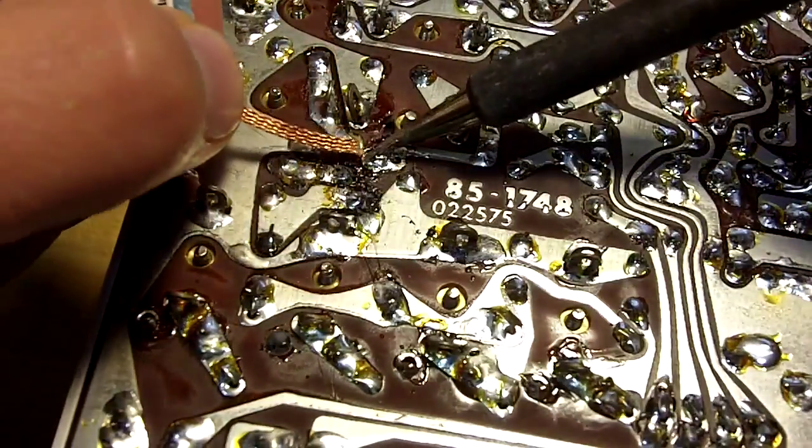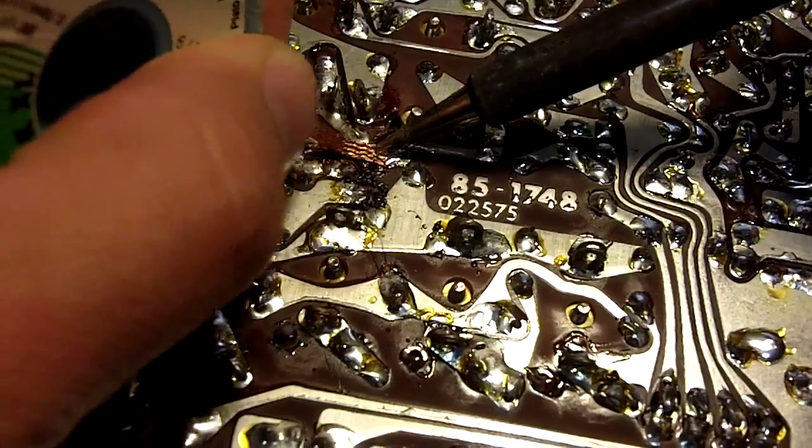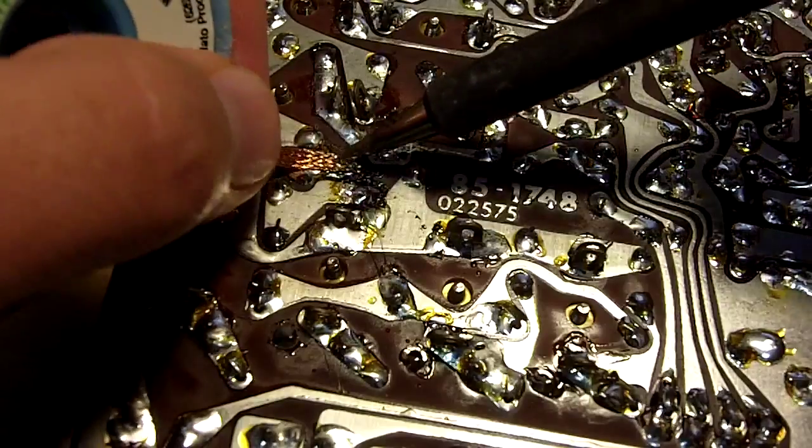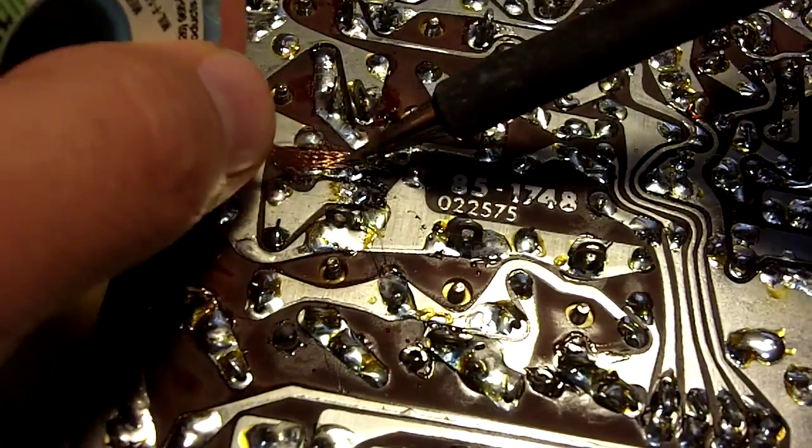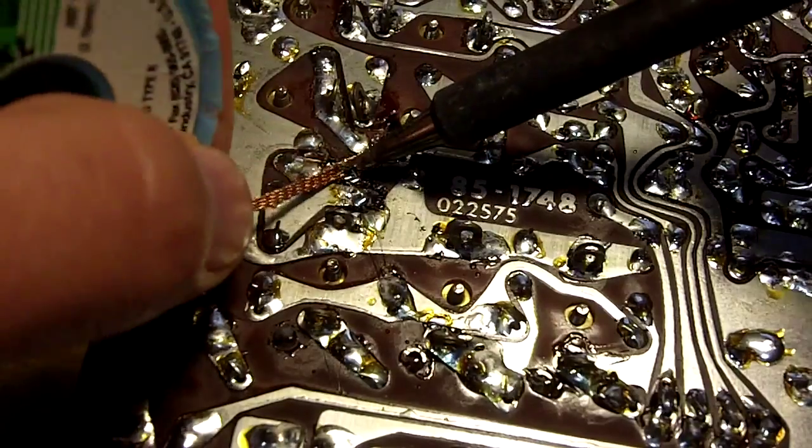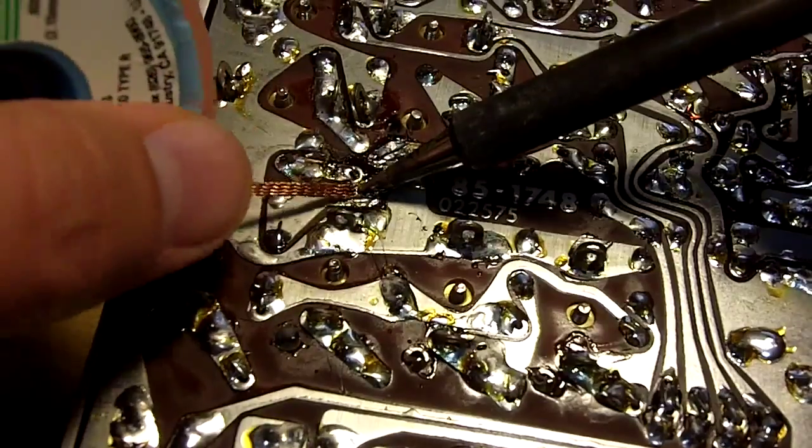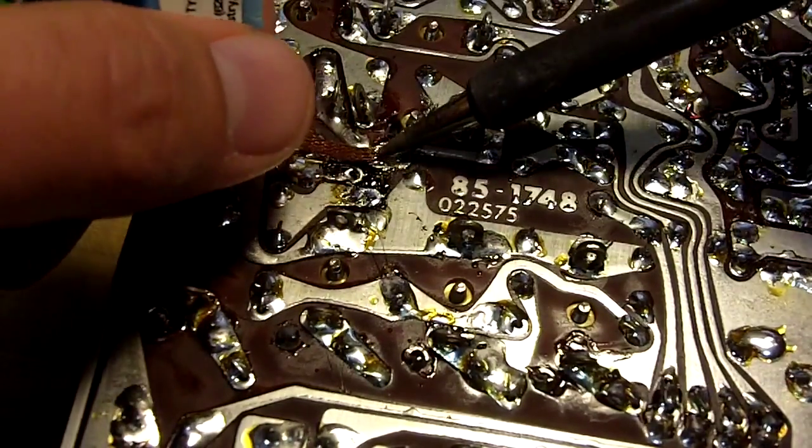So I'm going to take a little solder wick here, and if you're not comfortable with soldering and desoldering, you should find a buddy to do that for you. And I'm just going to remove the solder from the legs here of the device so I can remove it from the board. This is how we do that.